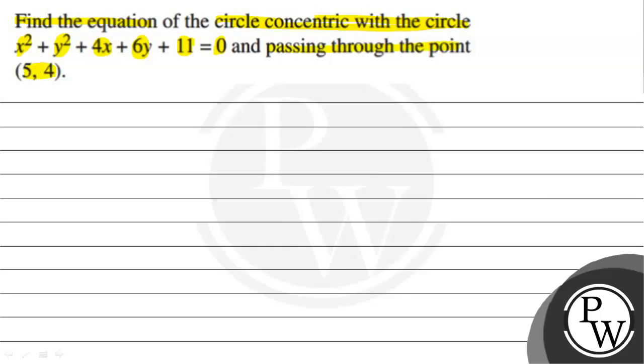So the key concept to solve this question is the general form of circle: x² + y² + 2gx + 2fy + c = 0.